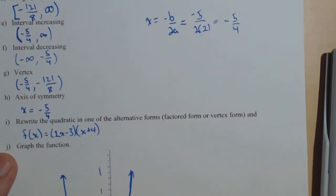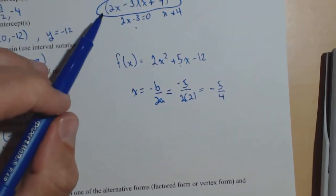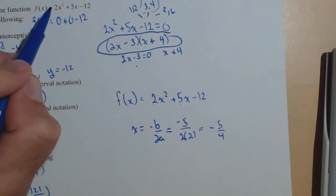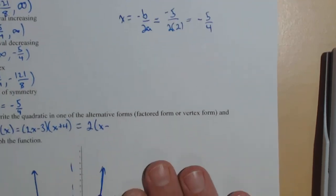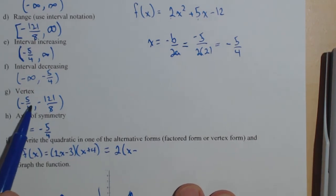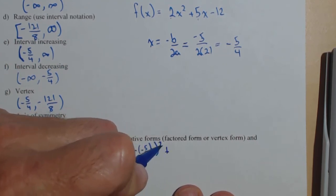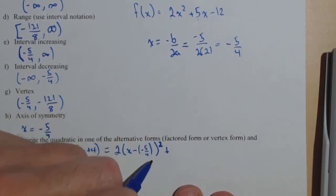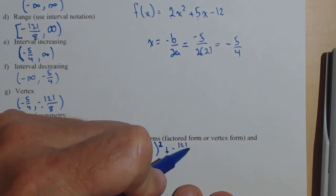And then the way we could write it in vertex form very quickly is the a is the same from vertex form. So it's still the 2. And then it's x minus the x-coordinate because it's basically a horizontal shift of the vertex. Excuse me. So x minus a negative 5 fourths squared. Don't forget the square. I see that happening a lot. People forget the square on it. It's quadratic. We need that square in there. Plus the y-coordinate of the vertex. So plus a negative 121 over 8.